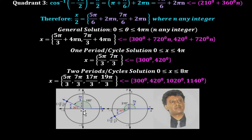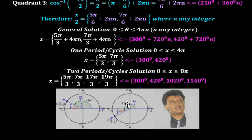Here is the picture format. In the second quadrant, the solution of x/2 is 5π/6, which is 150°, and the reference angle is π/6, which is 30°. In the third quadrant, the solution for x/2 is 7π/6, which is 210°, and the reference angle is π/6, or 30°.